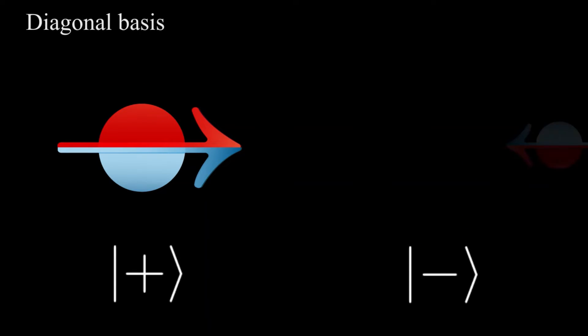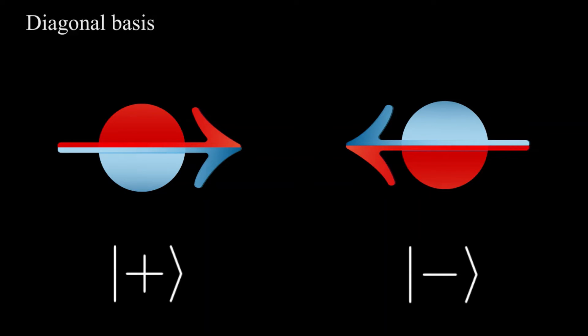However, there are other bases that are important as well. One particular important basis is... Because of its importance, there also exists a Dirac notation shorthand for it, and we will call them a diagonal basis.